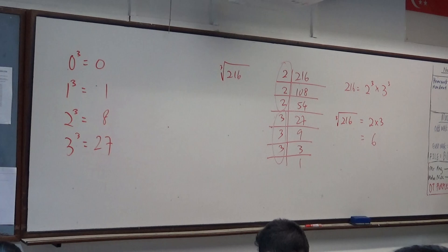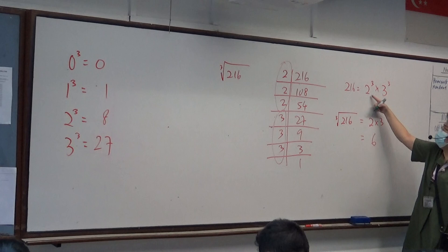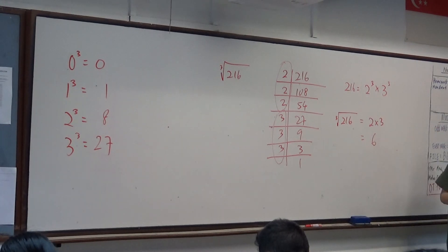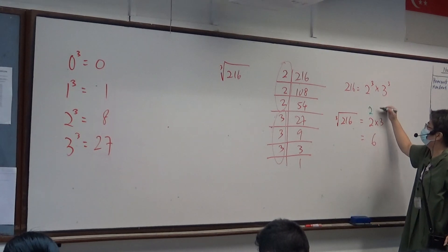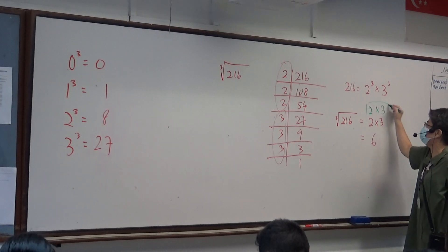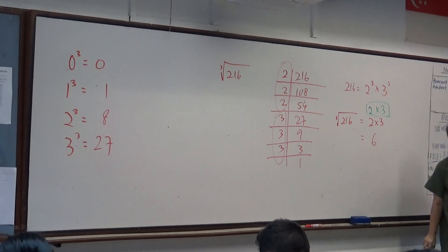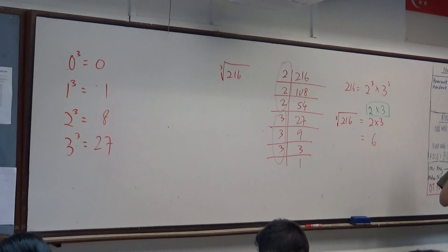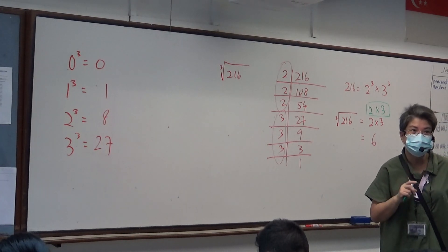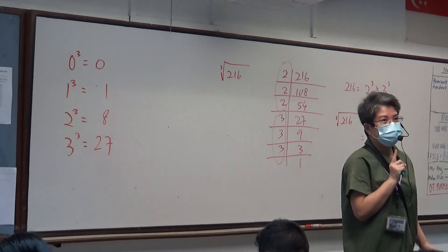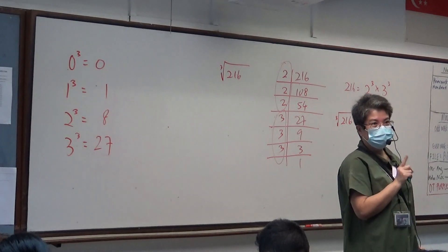Now I want you to look — it's the same logic. How do I get from here to here? I divide the power by 3. So I get 2 times 3. Can you see? I divide the power by 3. Now, what if the power cannot be divided by 3? Then the cube root is not a whole number. That's all. Are we clear?